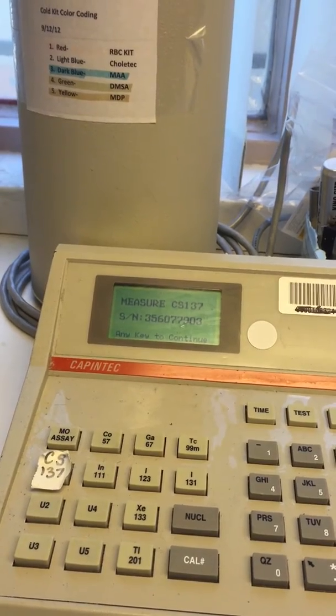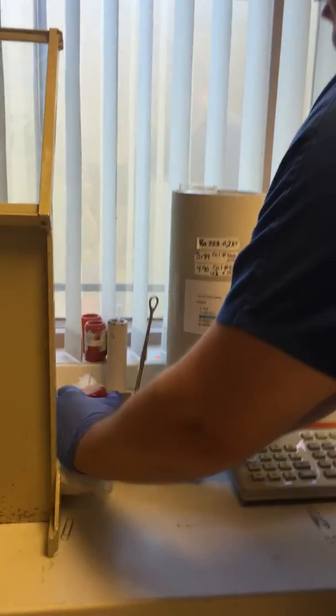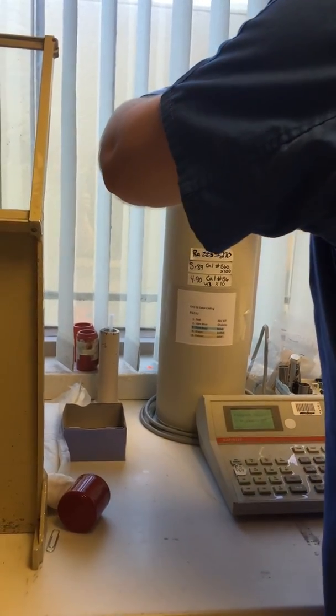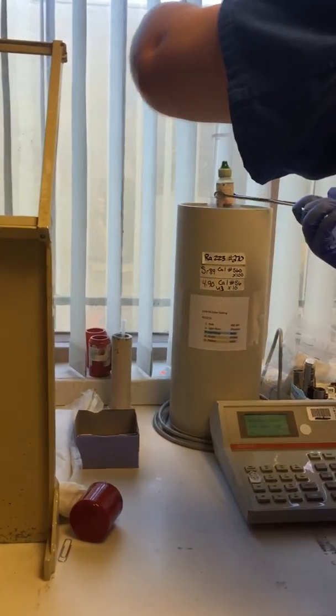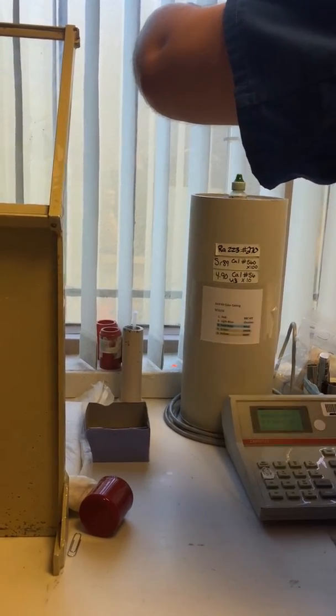Okay, now we're going to put the cesium-137 source into the dose calibrator. Okay, now we're going to use our tongs, just to be safe. Make sure it's right in the middle. Push enter.